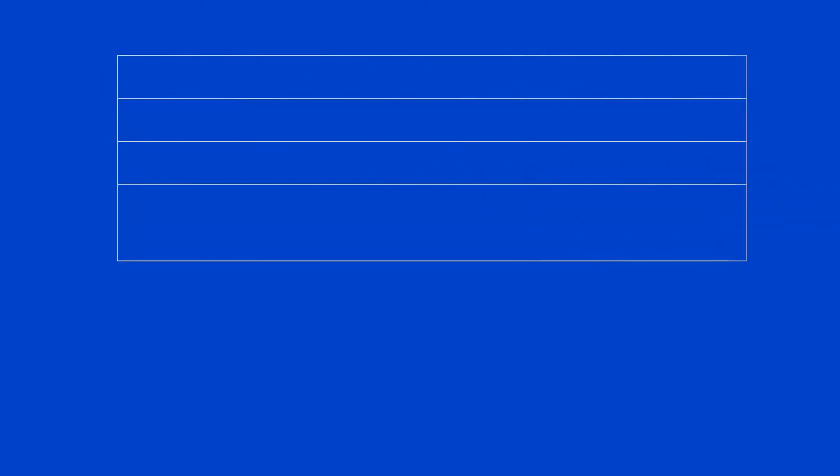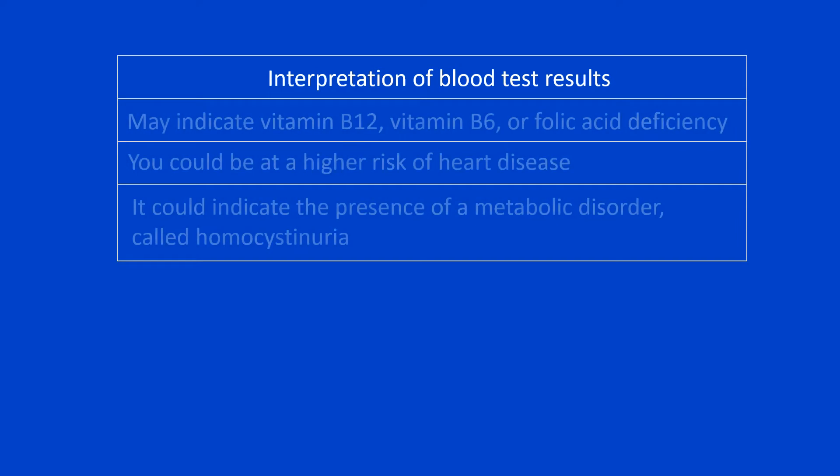Now, let's talk about the interpretation of blood test results. High homocysteine levels may mean that you may be deficient in vitamin B12, vitamin B6, or folic acid, because your diet does not contain adequate amounts of these nutrients.